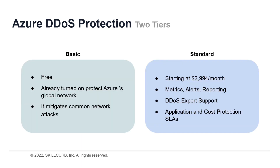There are two tiers associated with Azure DDoS protection: basic and standard. The basic tier is already turned on to protect Azure's global network and it mitigates common network attacks. The standard tier starts at $2,994 per month and provides complete metrics, alerts, and reporting of your web services. DDoS expert support and application and cost protection SLAs are included in this standard package.